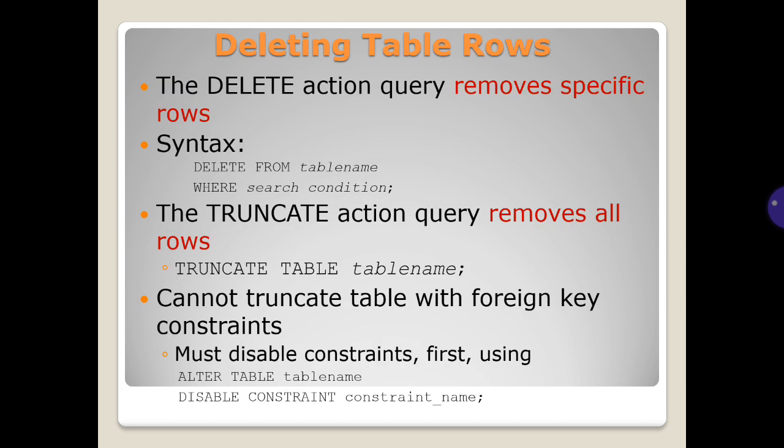There is an example. Deleting table rows. The DELETE action query removes specific rows. There is a syntax, and the TRUNCATE action query removes all rows. Cannot truncate table with foreign key constraints. Must disable constraints first.